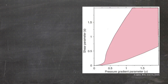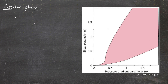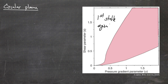Let's first start with the circular plasma — by which I mean a plasma having a circular poloidal cross-section. In the s-α diagram, plotting shear s as a function of pressure gradient α, we see two types of regions. The non-shaded area is a region of stability, usually referred to as the first stable region. Then we have a region of instability shown in magenta.